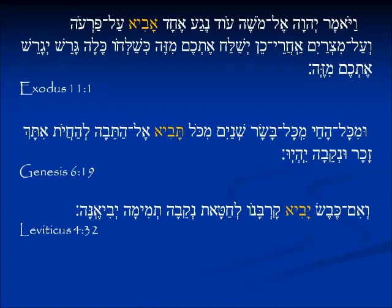In Exodus 11:1, God is speaking to Moses and says: od nega echad avi al-Pharaoh — one more plague I will bring on Pharaoh. In Genesis 6:19, speaking of how the animals come on the ark, Noah gets an instruction: sh'nayim mikol tavi el-ha-teva — two of each one you will bring onto the ark.